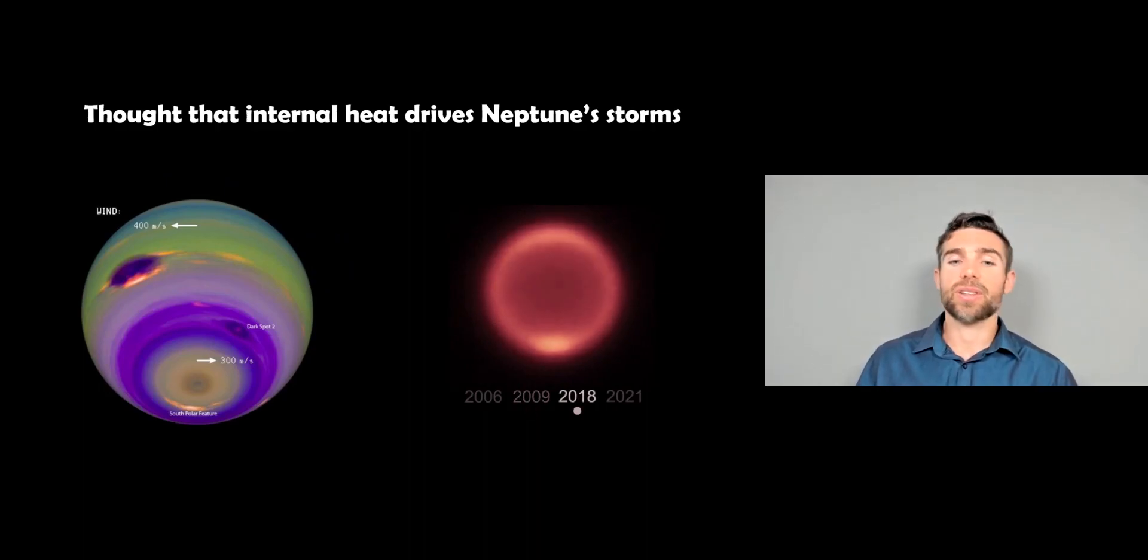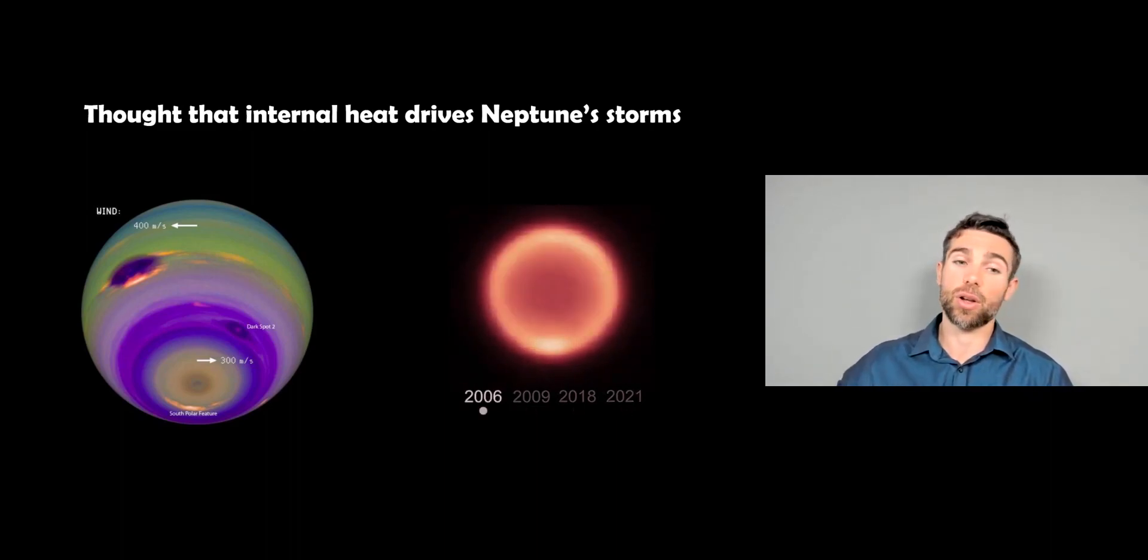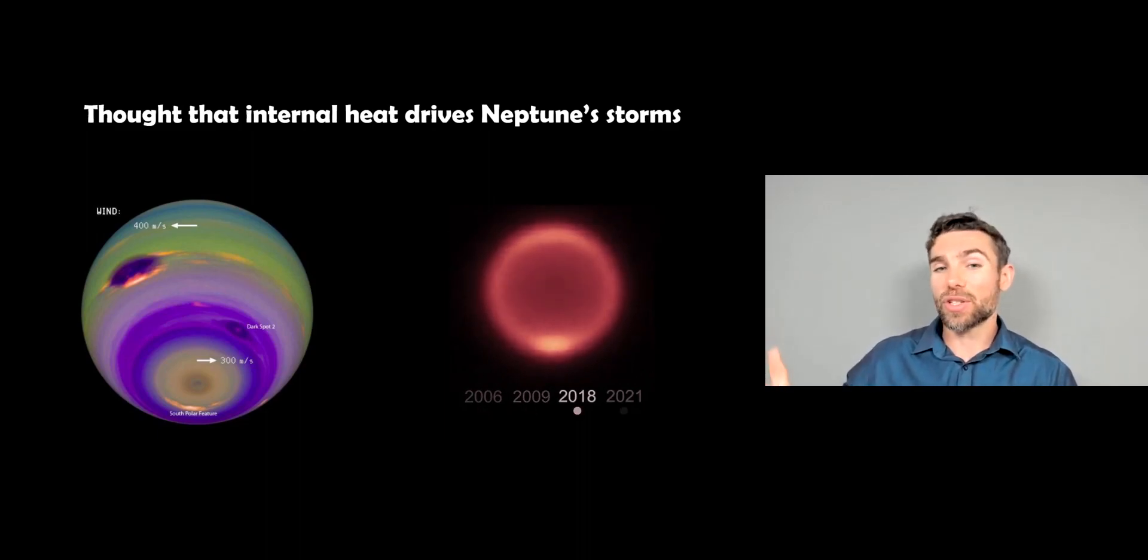Why does Neptune have such powerful winds? And why does it have these storms? Because again, it's further away from the Sun. Well, one of the thoughts is that internal heat is driving these storms. It's not the energy from the Sun, because it's a long way from the Sun compared to the other planets. But there's some internal heat that is actually driving these powerful storms, which gives the high wind speed. Neptune has an unusual amount of internal energy in comparison to some of the other planets. There's a kind of an excess there which is driving the storms, which is not necessarily known why it's there. Some thermal imaging of Neptune is shown on the right there over the years and how it's changing. So something's happening with Neptune internally which is then driving these storms, and it also gives rise to our highest wind speeds in the solar system.